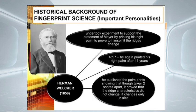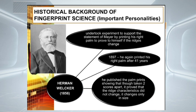Next is Herman Welker. In 1856, he undertook an experiment to support the statement of J.C. Mayer by printing his right palm to prove to himself if the ridges change. In 1897, he printed his right palm, and after 41 years, he again reprinted his right palm to prove that prints do not change. He then published the palm prints showing that though taken two scores apart, it proved that the ridge characteristics did not change — but they only changed in size.